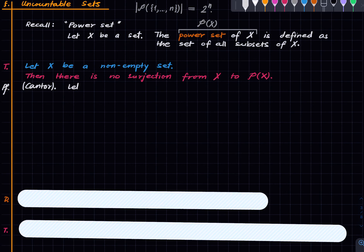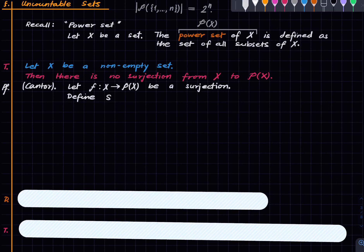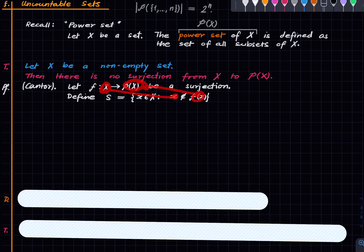Suppose we have a surjection — fix a function f from X to the power set of X that is a surjection. We want to produce a contradiction. Here is the very clever idea: define the set S as those elements in the domain of f which do not lie in their own image. This is a meaningful statement because fx is a subset of X, so asking whether x lies in f(x) makes sense. S collects those elements of X which do not lie in their own image.